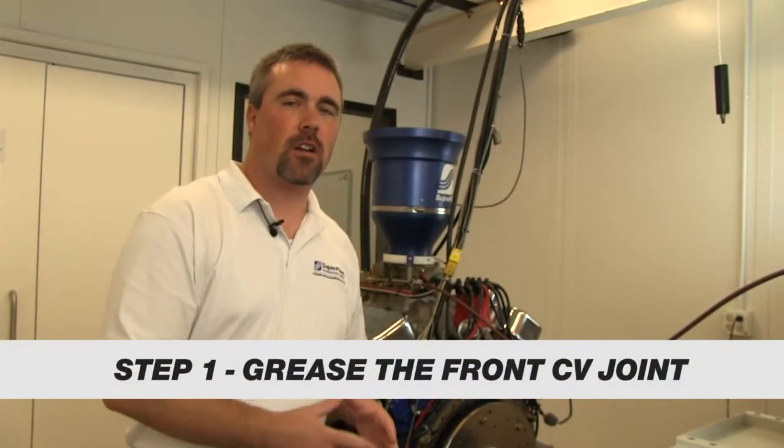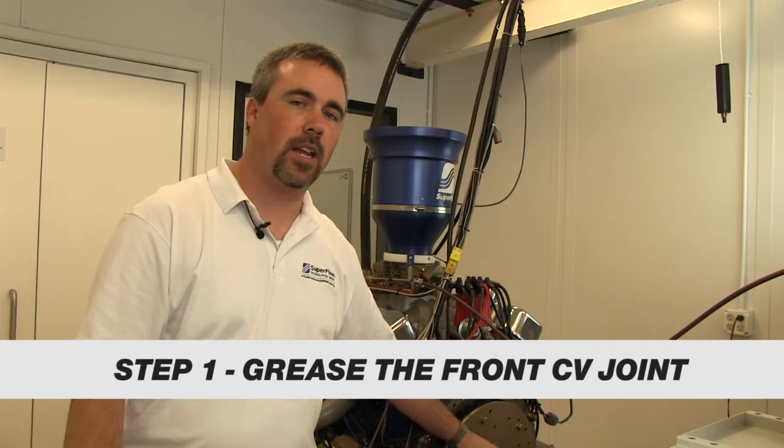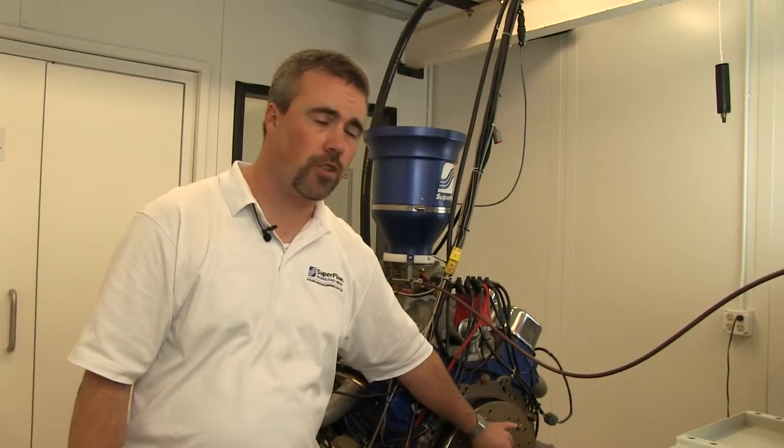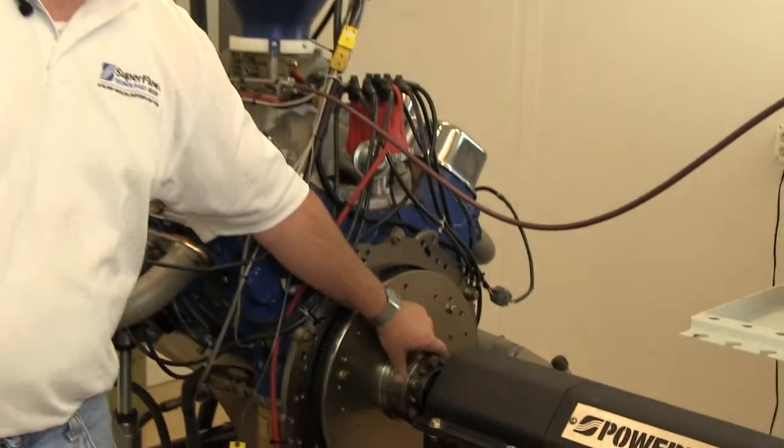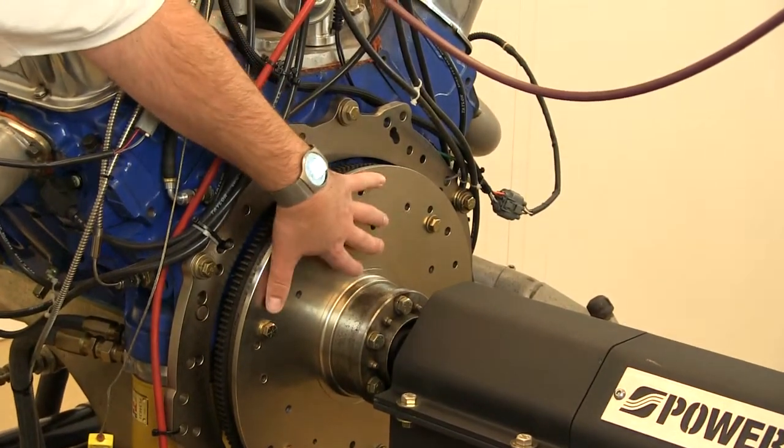The most regular component on the Superflow PowerMark that you'll need to access and maintain is the front CV joint on the driveshaft. That's the CV joint mounted to the drive plate adapter, which in turn is mounted to the flywheel that is mounted to your engine.